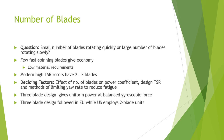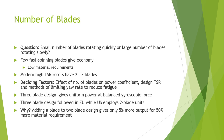The three-blade design gives uniform power with balanced gyroscopic forces produced by the wind. The three-blade design is followed in the EU, while the United States employs two-blade design units. Adding a blade to a two-blade design only gives five percent more output for fifty percent more material requirement — so the efficiency difference is only five percent, but material cost is fifty percent more for the three-blade design.